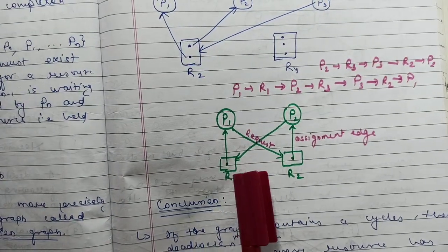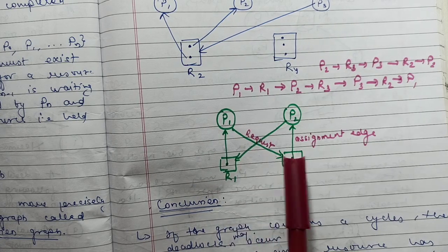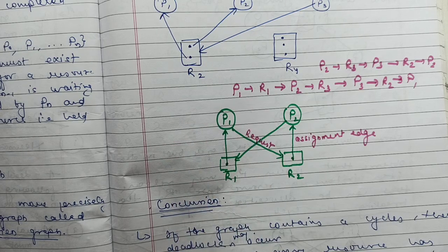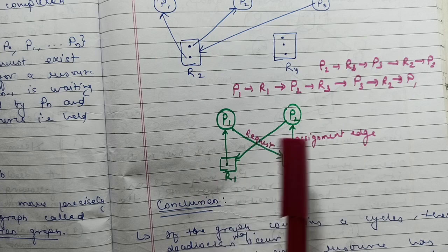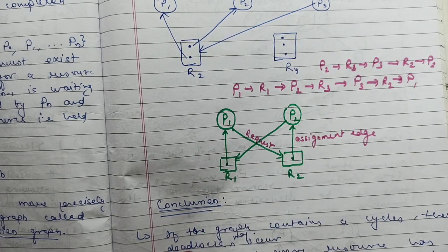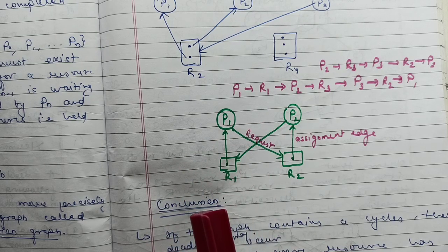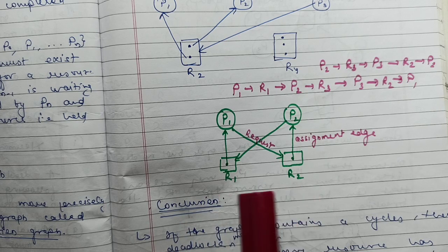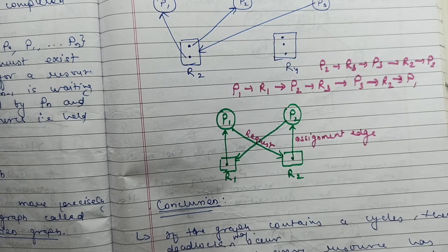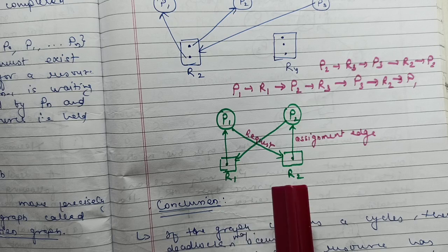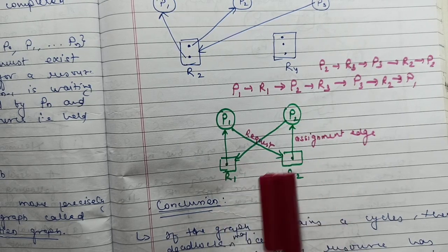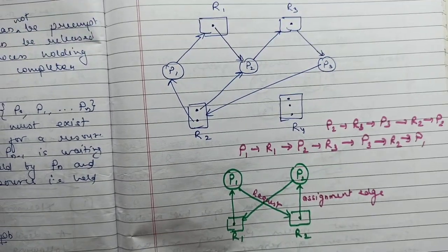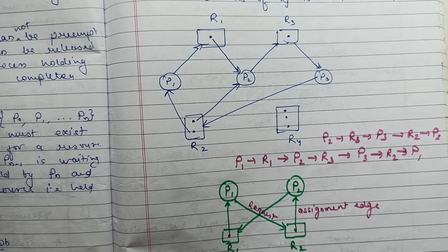If every resource has a single instance and there is a cycle in the graph, then deadlock will definitely occur. For example, if P1 requests R2 and R2's single instance is held by P2, and P2 requests R1 whose single instance is held by P1, a cycle exists and both processes are permanently blocked. Since resources have single instances, deadlock definitely occurs. So: cycle with single-instance resources means definite deadlock; cycle with multi-instance resources means deadlock may occur.